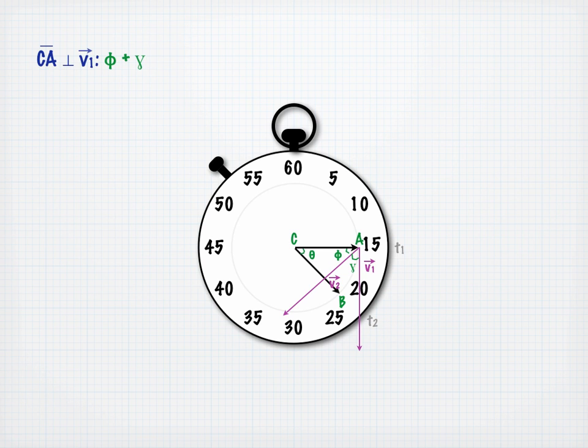Now since the line CA is perpendicular to our velocity vector V1, the angles phi and gamma add up to 90 degrees. If phi plus gamma equals 90 degrees and phi plus theta equals 90 degrees, the angle theta must be equal to the angle gamma.